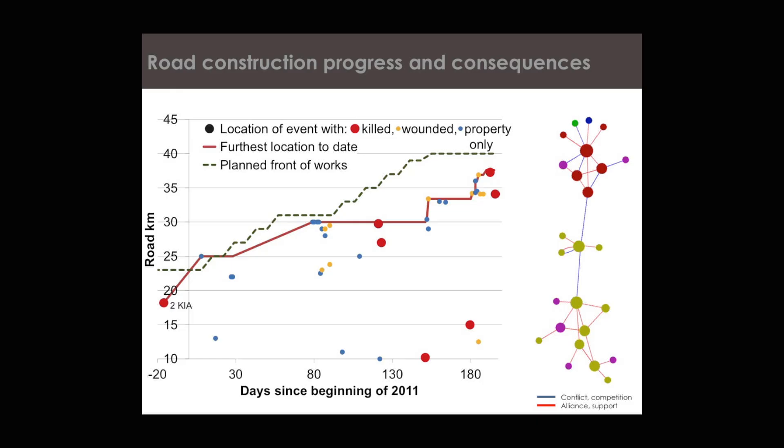However, it also came at a very high cost. As you can see on this slide, for each kilometer of road built, civilians and armed militias were killed. So how do we manage the negative impacts of development projects and how can we exploit the positive impacts?